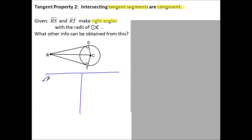We have been given that the angles S and T are 90 degrees. We also know that segment SC is a radius, and segment CT is a radius, and radii of the same circle are congruent. That means segment SC is congruent to segment CT. Both are radii of circle C.